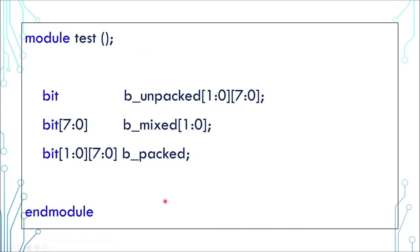You can create a multi-dimensional array as well. This first example is purely unpacked while the last one is purely packed. And the middle one is a hybrid. They all have the same size though, which is 2 by 8 bits.